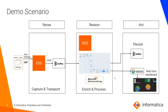Here is the demo scenario. The Informatica Edge Data Streaming reads data from raw web logs in UDP format and converts that into a nice JSON and puts it into a Kafka queue.